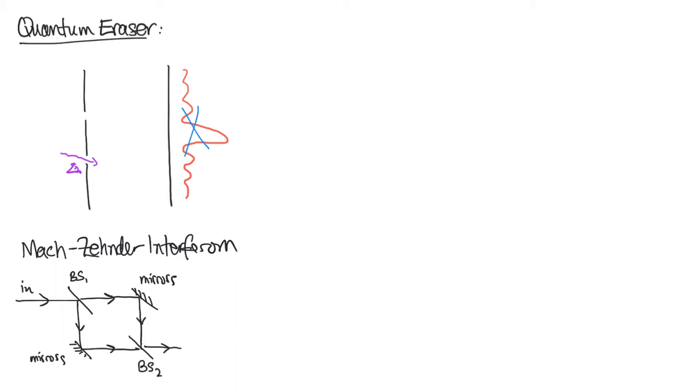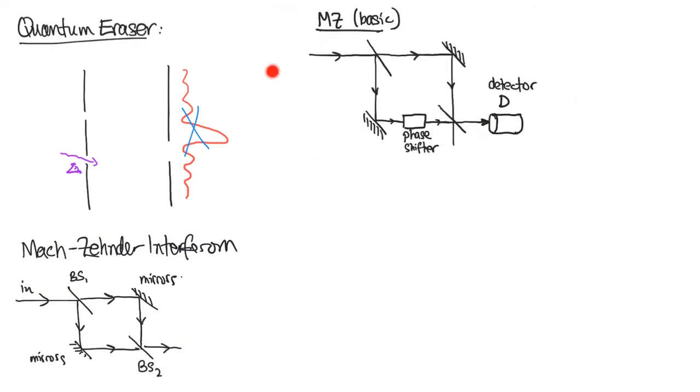We're going to build up towards the quantum eraser starting with a basic Mach-Zehnder interferometer. Here we have our basic setup, the same as what I drew before but I've added one feature that I want to describe. We have our input atoms that encounter beam splitter 1 that sets up two paths and if we do not monitor or have which-way path information then the quanton is in a superposition of taking both paths and can arrive at detector D in that superposition state.